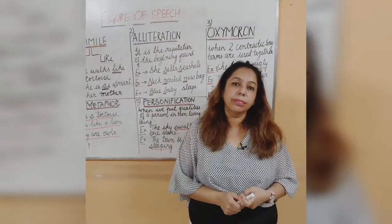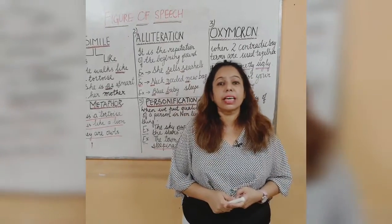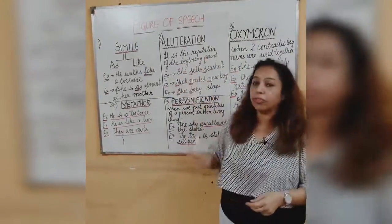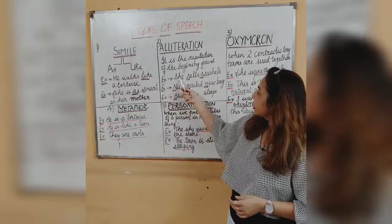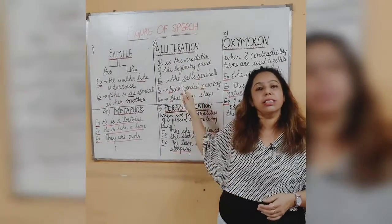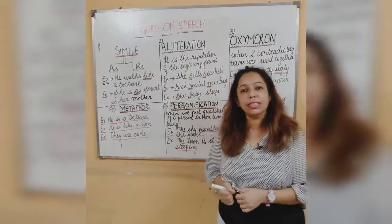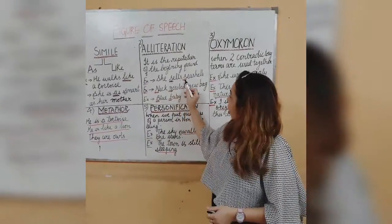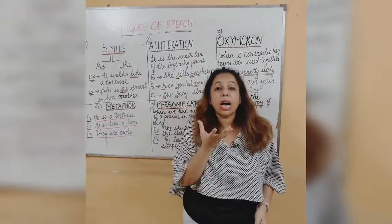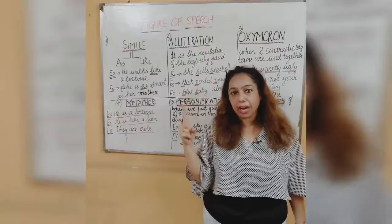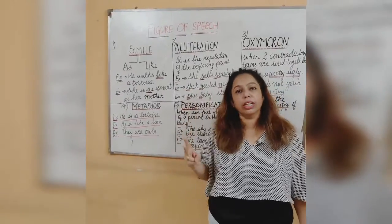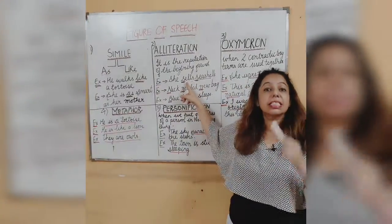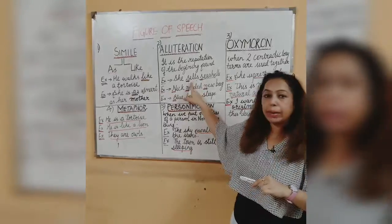Next is alliteration. In alliteration, what do we see? We look at the first alphabet of the words — it is the repetition of the beginning sound. For example: 'She sells seashells.' You can see here — 'sells' starts with S, 'seashells' starts with S. Basically we check both the alphabet and the sound. The sound of 'sells' is 'S' and 'seashells' is also 'S'. So the alphabet is the same and the sound is the same.